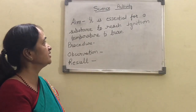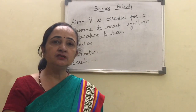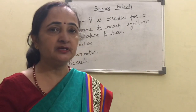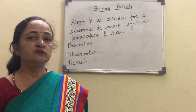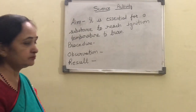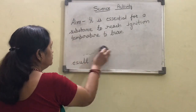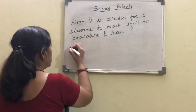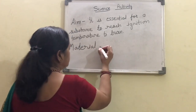Now let's start the second activity. The aim for the second activity is: it is essential for a substance to reach its ignition temperature to burn. Ignition temperature is the minimum temperature required for a substance to burn. You will write this aim, and then write the materials required. This activity is also given in your NCERT book.